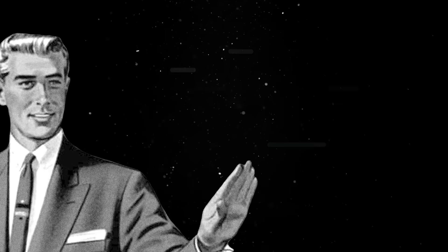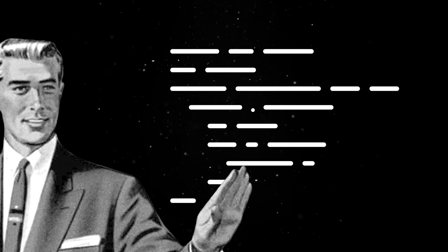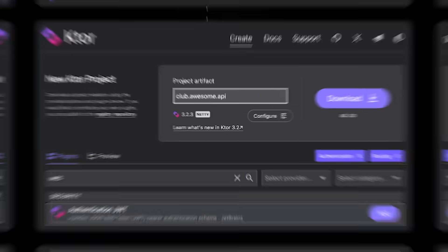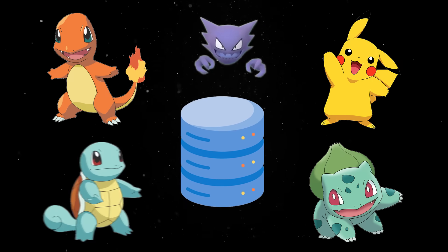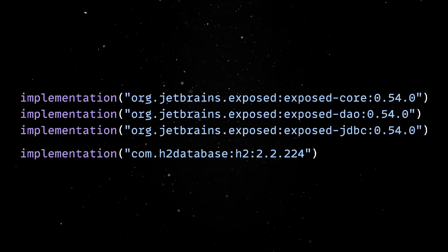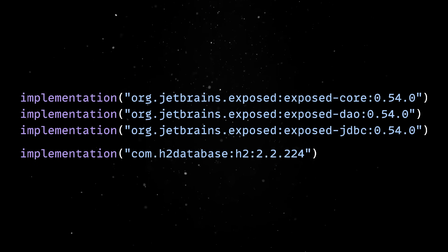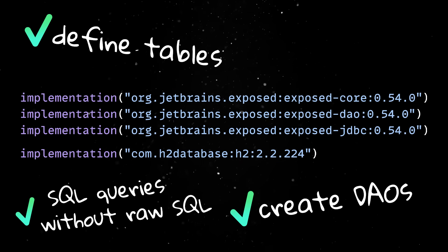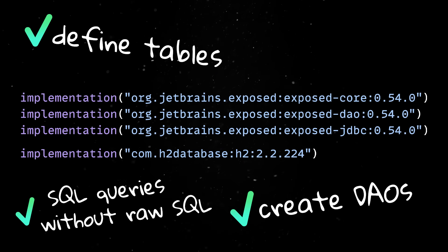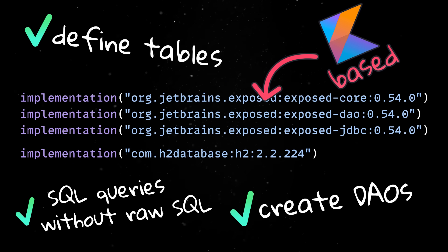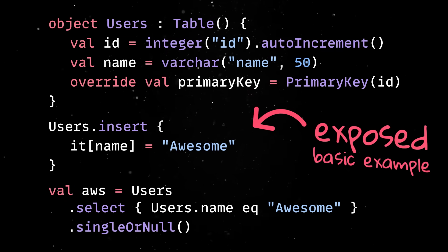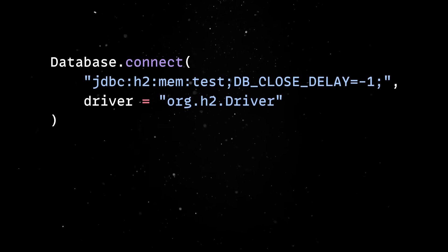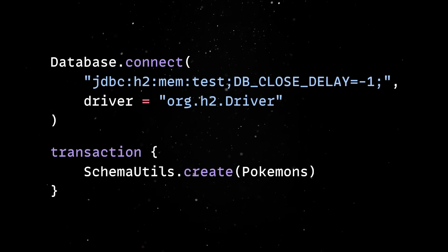Let's look at a practical example. The first thing we'll do is use the Ktor wizard to generate a new project. The plan is to create a simple REST API to store Pokémons in a database, so we'll add H2 for in-memory storage and the Exposed ORM dependencies. This gives you everything you need to define tables, create data access objects, and perform SQL queries without writing raw SQL. In the main file, we'll tell Ktor to connect to an in-memory database and initialize our tables in a transaction block.